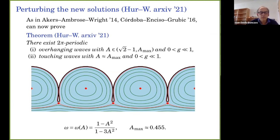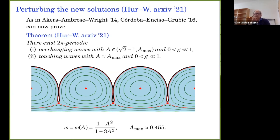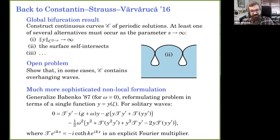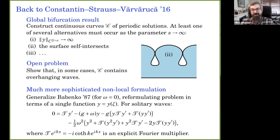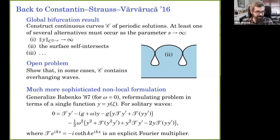In the remaining time I want to go back to global bifurcation. Returning to the Constantin-Strauss-Varvaruca paper: they construct a continuous curve of periodic solutions and one of several things happens, with self-intersection being particularly interesting. Even with our small explicit families of overhanging waves, it's still open whether these curves contain overhanging or touching waves. This remains an important open problem.